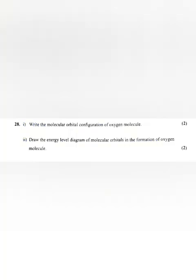Question 28: Write the molecular orbital configuration of oxygen molecule. Answer: MO configuration of O2 is sigma 1s2, sigma star 1s2, sigma 2s2, sigma star 2s2, sigma 2pz2, pi 2px2, pi 2py2, pi star 2px1, pi star 2py1.